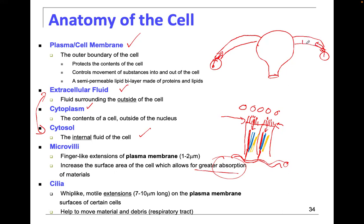We have the cilia — these hair-like projections in the fallopian tubes — and they're beating rhythmically in the direction of the uterus to propel the egg. Sperm are moving in the opposite direction, traveling up to meet the egg. When the egg and sperm come together, you have fertilization. The cilia then beat the fertilized egg into the uterus where implantation takes place.